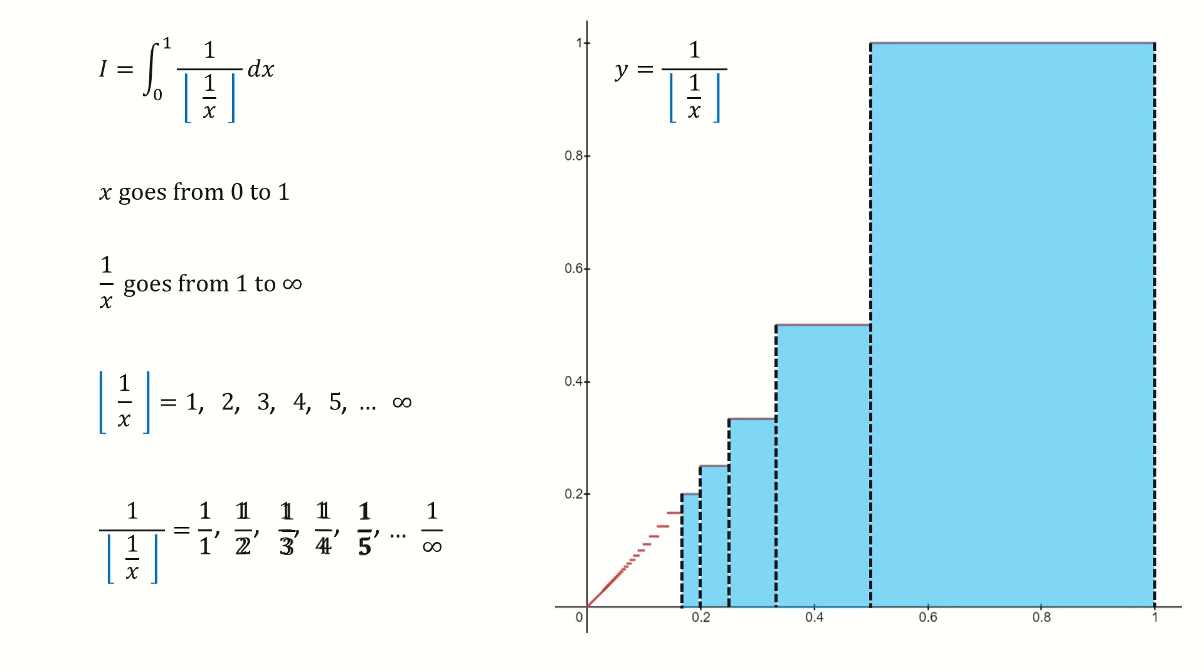And for each rectangle, the area equals to the height times the width. And we already got the height for each of them. And we mark them here. So next, we need to find the width for each rectangle.